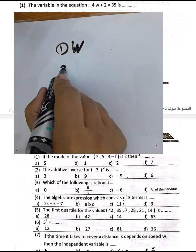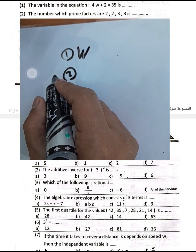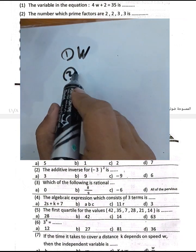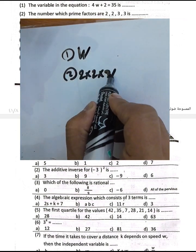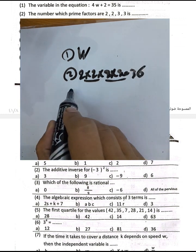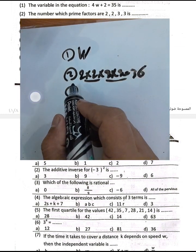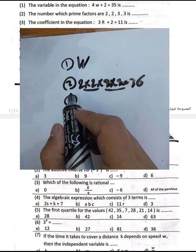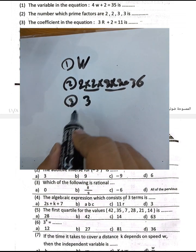Question number 2: the number whose prime factors are 2, 2, 3, and 3 equals 2 times 2 times 3 times 3, which is 4 times 9 equals 36.